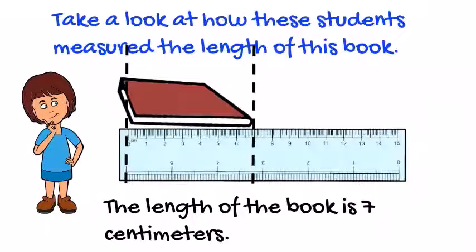Oh, I got it now. So I have to make sure that the book is lined up properly on the ruler right next to the zero. That's correct, Anne. You've got it.